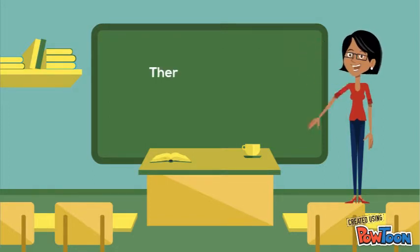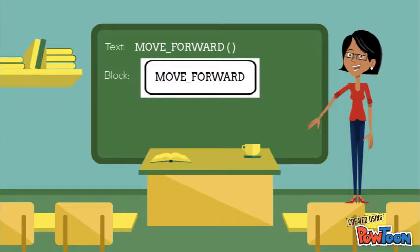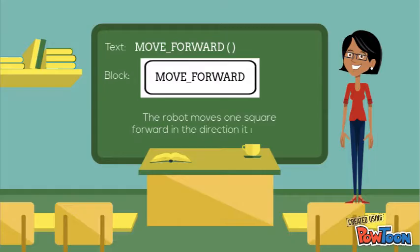There are four basic commands for moving the robot on the grid. The move forward command moves the robot one square forward in the direction it is facing. Like this.